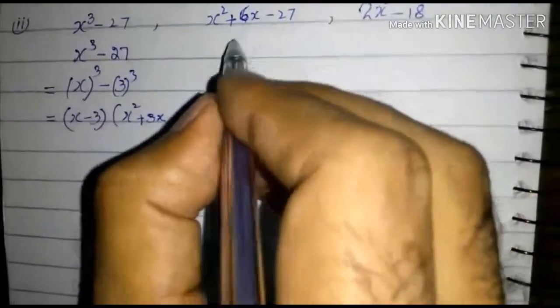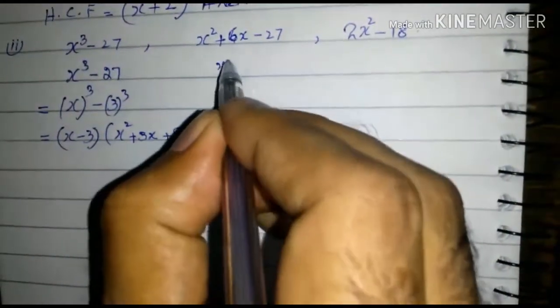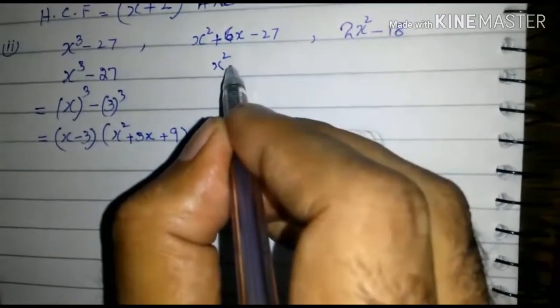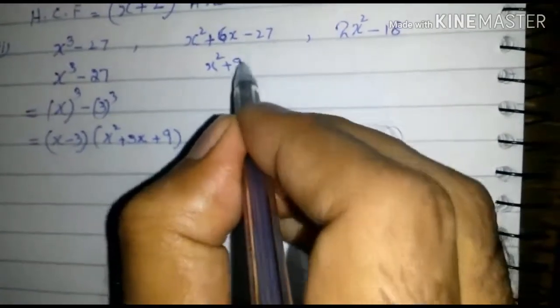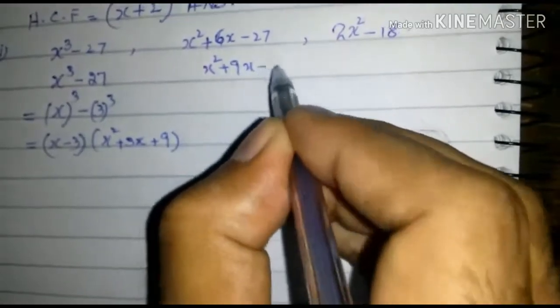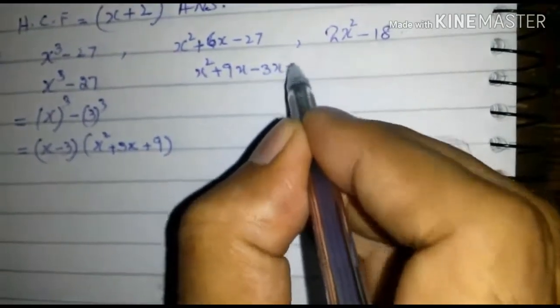So it is equal to x minus 3 into x square minus 3x, sorry plus 3x plus 9. Now consider this x square plus 9x minus 3x minus 27.